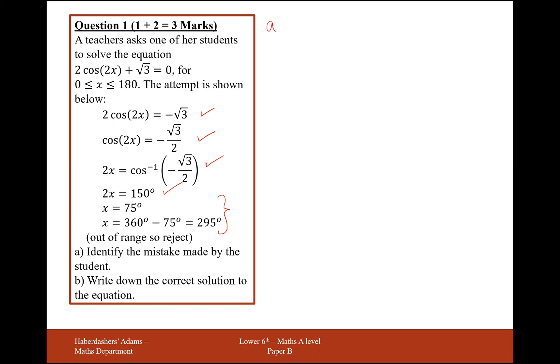So what the student should have done is after doing all of these steps here, find all the values of 2x between 0 to 360, because that's what 2x is, and then divide by 2.